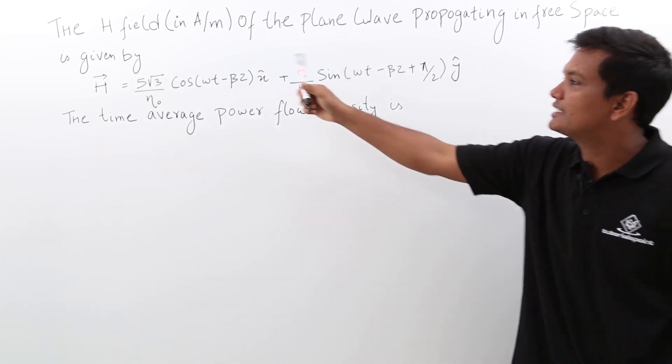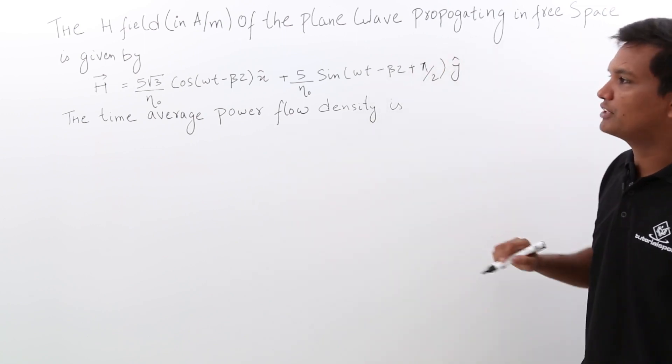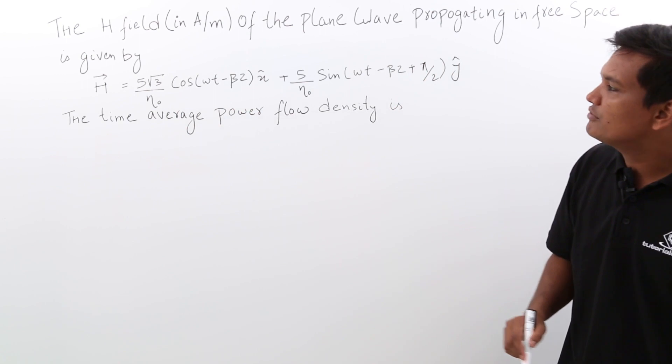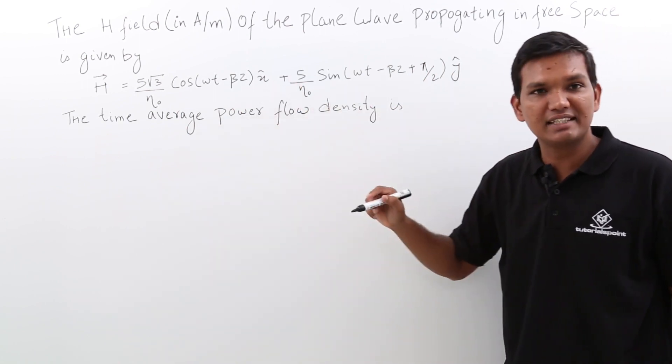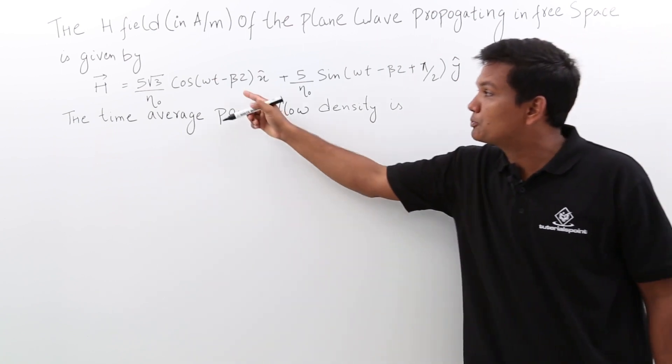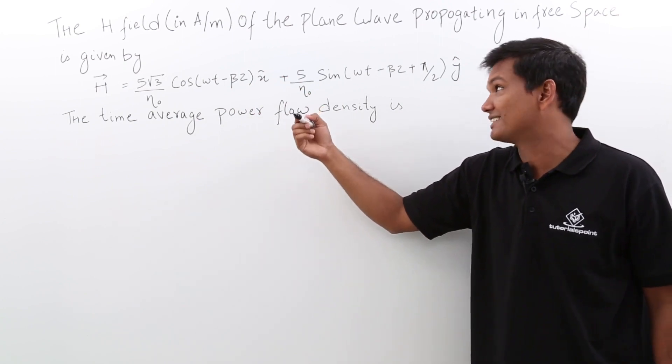It is being said there is an H field, which is a magnetic field propagating in free space, which is given by this expression. Now, if you observe, the H field has two components: it is across the x axis and the y axis, and it is propagating minus beta z. So it is propagating along plus z axis.